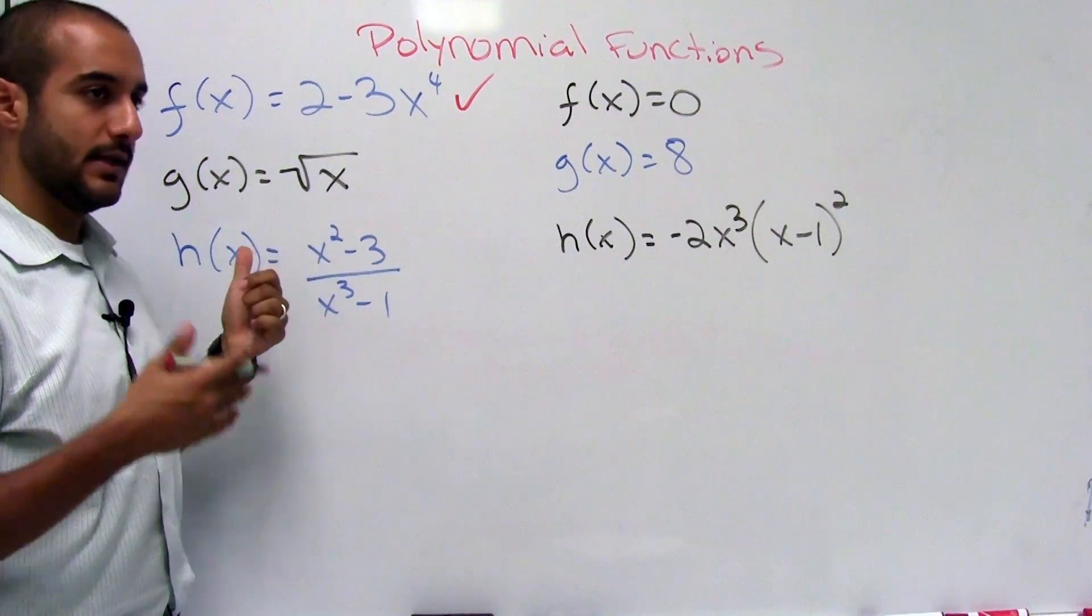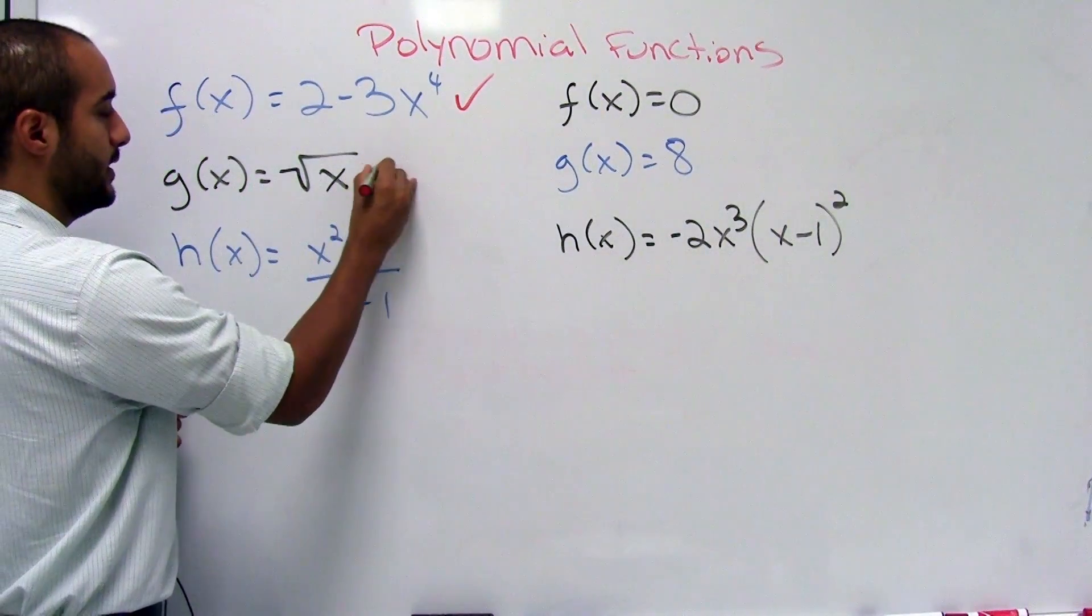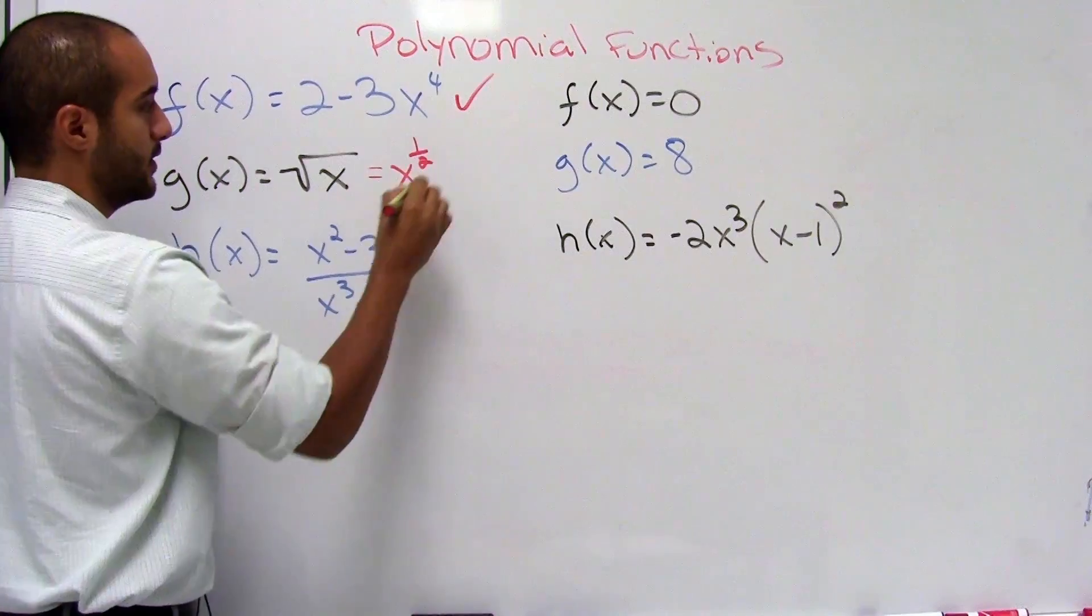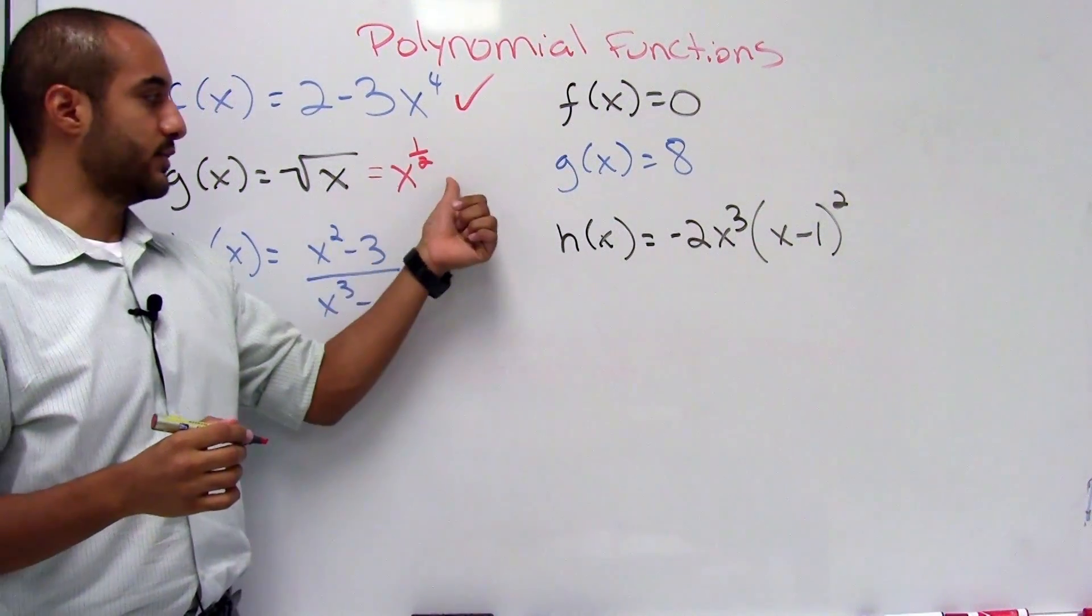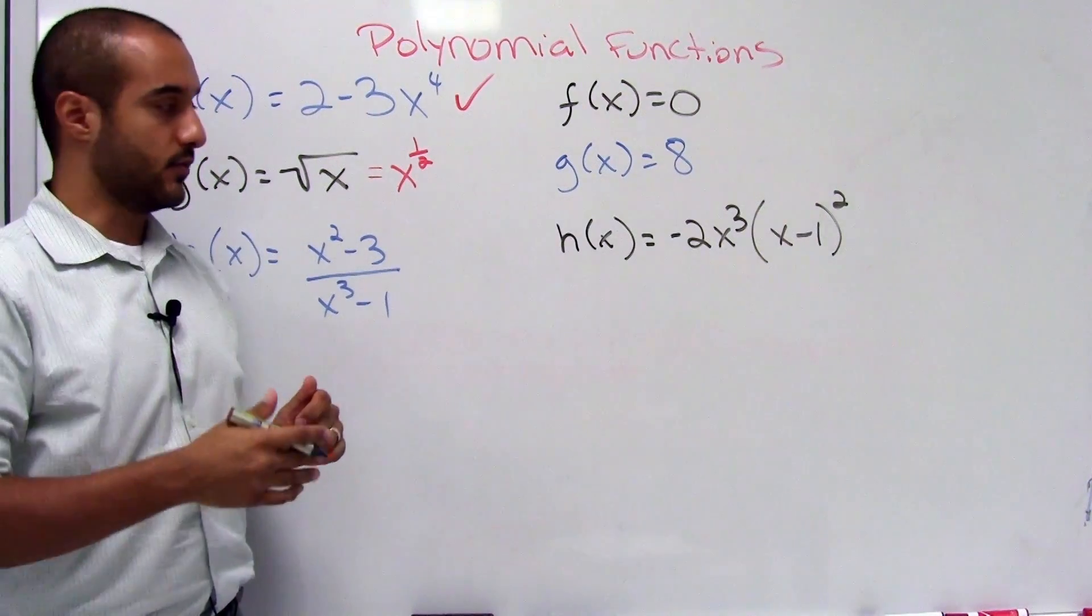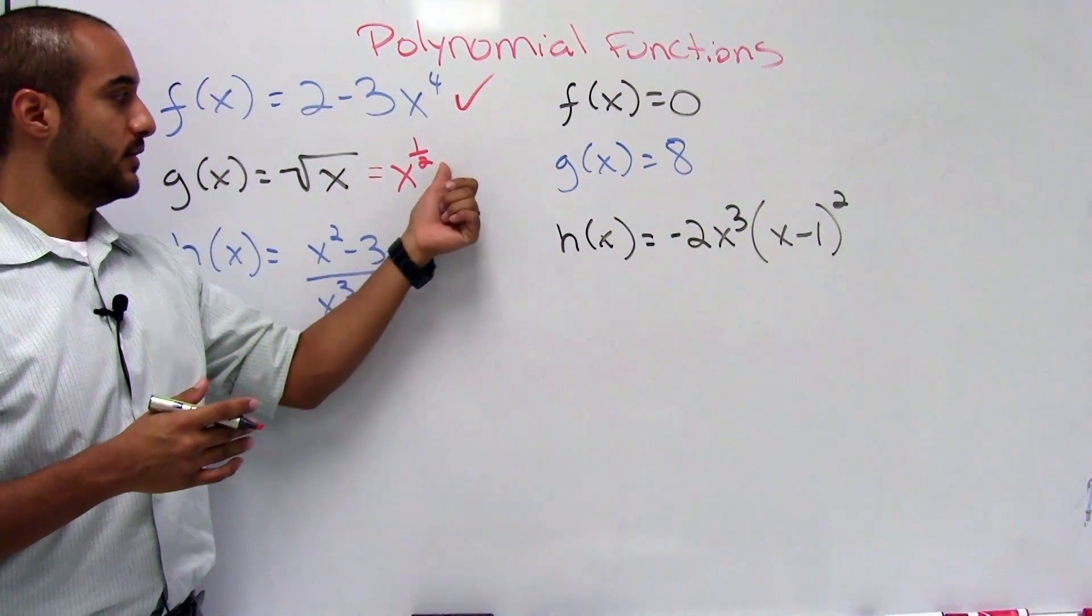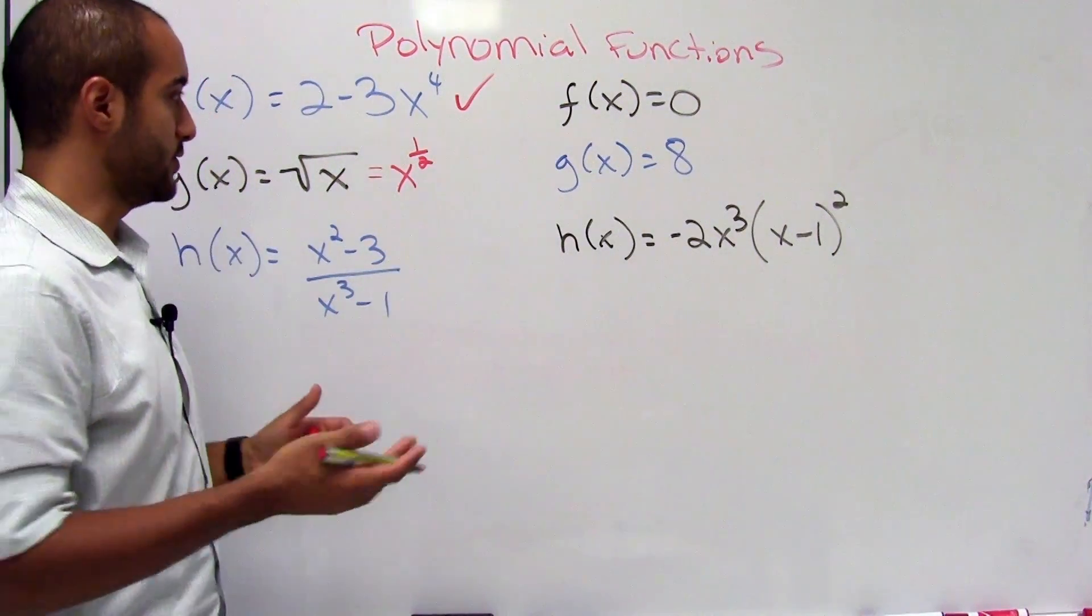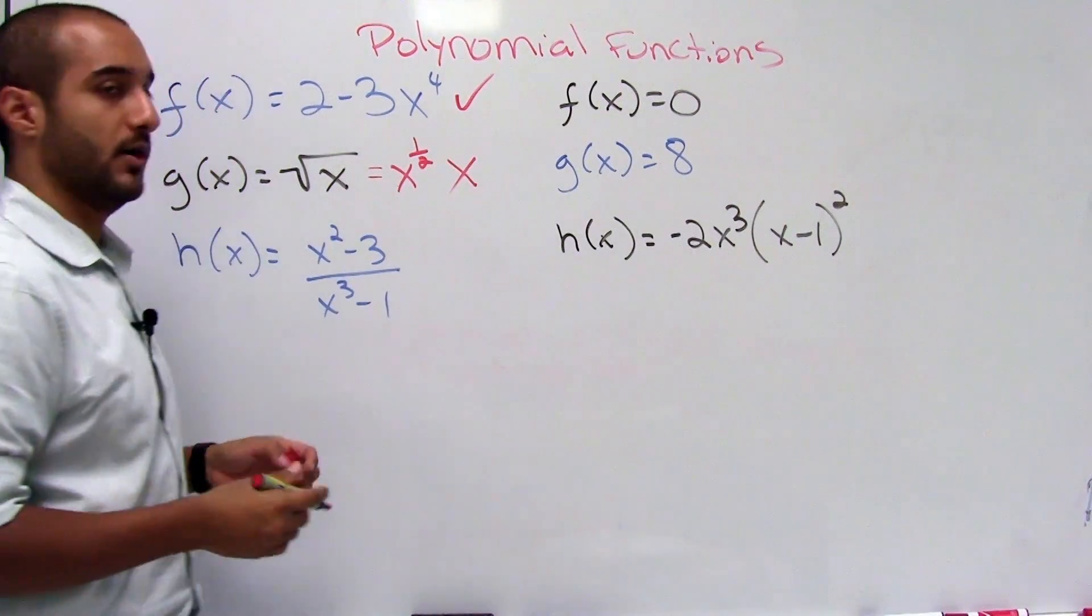This one, let's simplify it a little bit more. This one actually says x to the power of 1 over 2. That's part of the definitions for the square roots. So this is not an integer. So this is not a polynomial function.